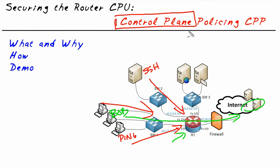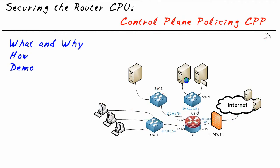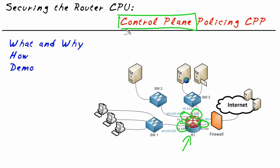Let's use a simple example to see how Control Plane Policing can solve that. Say we want to protect against someone sending millions of ping requests to the router. The challenge is: which interface do we want to protect? The answer is all of them. There's a logical interface on R1 called the Control Plane Interface, and if we apply quality of service and policing on the Control Plane, it doesn't matter where the packets come in — the router can rate limit packets down to a manageable flow so it won't overwhelm the CPU.